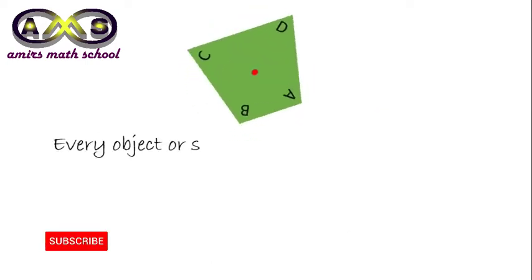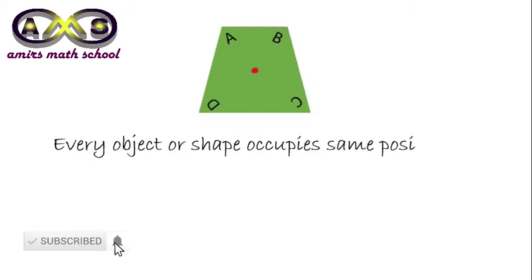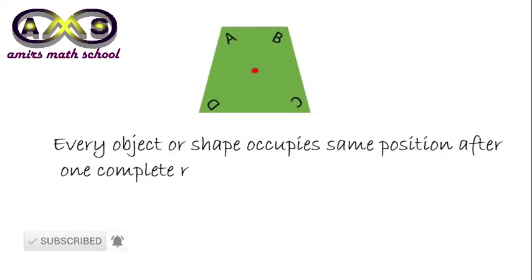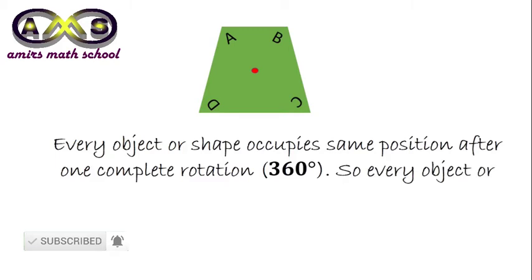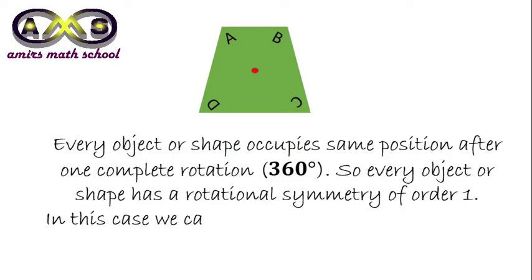Every object or shape occupies the same position after one complete rotation, that is 360 degree rotation. So, every object or shape has a rotational symmetry of order 1. In this case, we can say the object has no rotational symmetry.